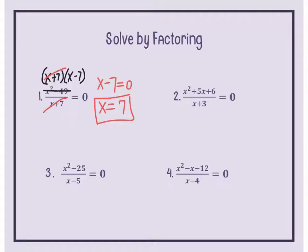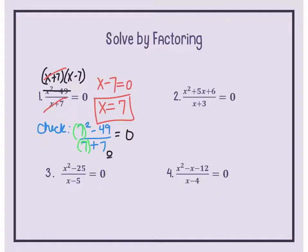This is called checking your solutions, and we'll explain why it's important. We take that 7 and plug it back in. On the numerator, 49 minus 49 equals 0. Zero over 14 does equal 0, so it is a true solution. One reason for checking is to make sure our solutions are not part of a hole or an asymptote — we're really checking that the denominator does not equal 0.